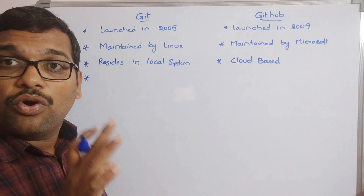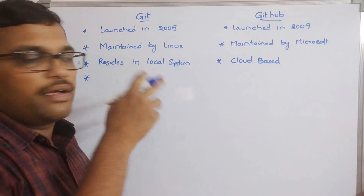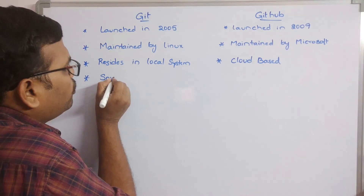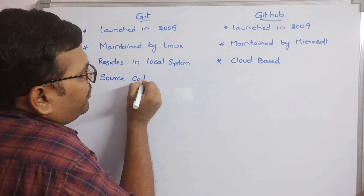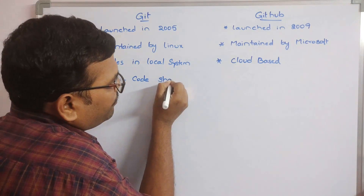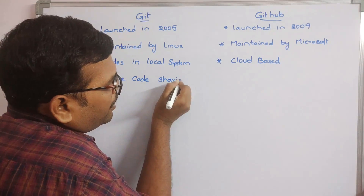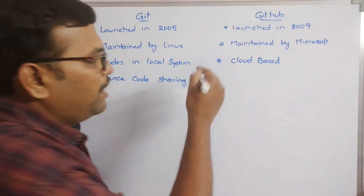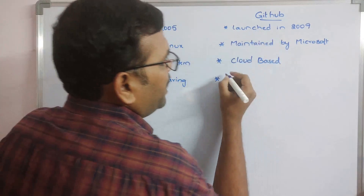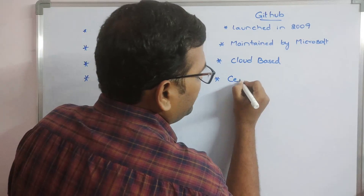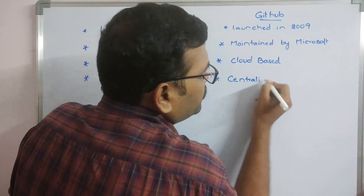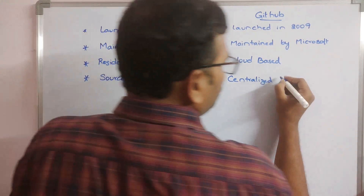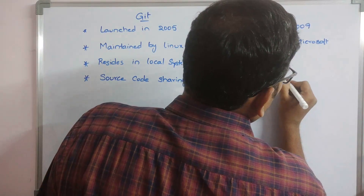Git is mainly used for source code sharing. GitHub provides centralized code sharing, which can be made available to the public.